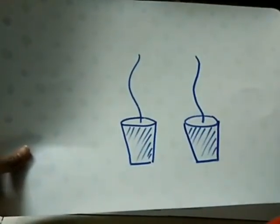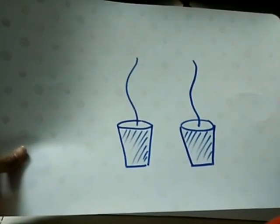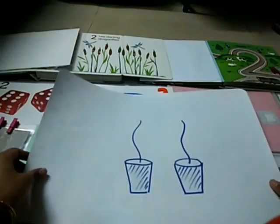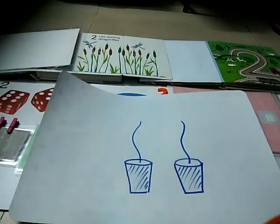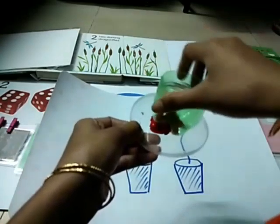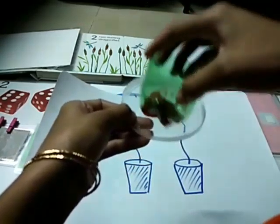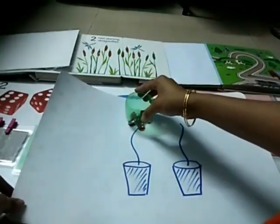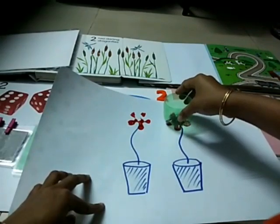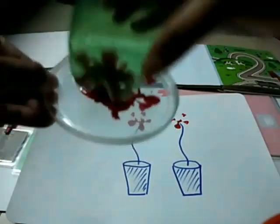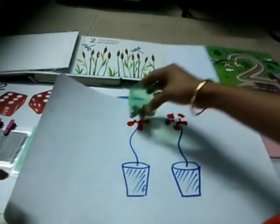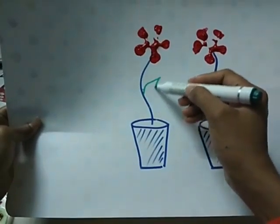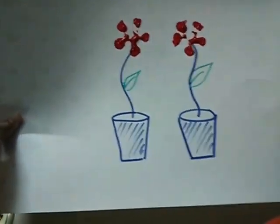Before planting the flower, we will count these pots — one, two. Let's make two flowers on these pots. Take some color — it's a pretty red color — and I've taken a bottle and we will print a flower. One flower, two flowers! Do you like it? How many flowers did I print? Two flowers! Let's draw two leaves also — one, two. And how do we write two? Two!